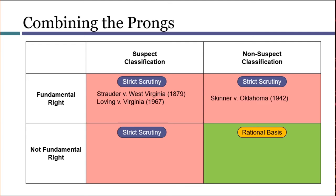Skinner is an example of a law that involved a fundamental right — procreation — but no suspect classification. The classification in the law was that some people had been convicted of certain crimes and other people were convicted of different crimes. That's not a suspect classification; we routinely allow different punishments for different crimes. What's different about Skinner is that the punishment involved a fundamental right. So for that reason, the court demanded a really good reason for the government's decision, and it turned out there was no really good reason.